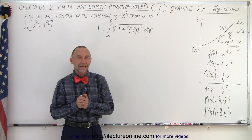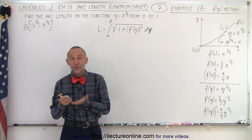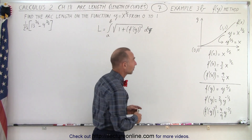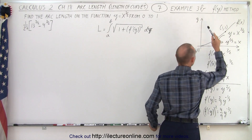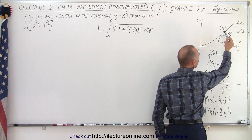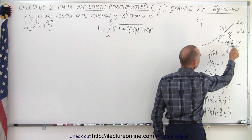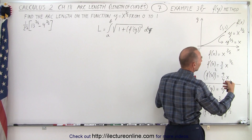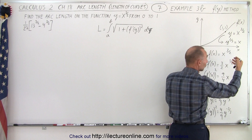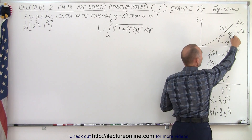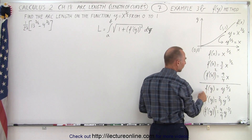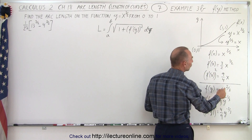Welcome to Y Lecture Online. Here in example 3b we're going to do the exact same problem we did in 3a, but instead of using the f of x method we're now going to use the f of y method. Our function was y equals x to the 3 halves power, but we can convert that into x equals y to the 2 thirds power. So instead of writing f of x equals x to the 3 halves, we can now write that f of y is equal to y to the 2 thirds.